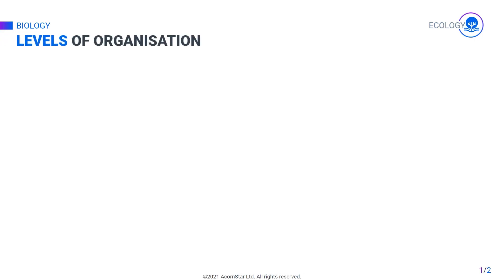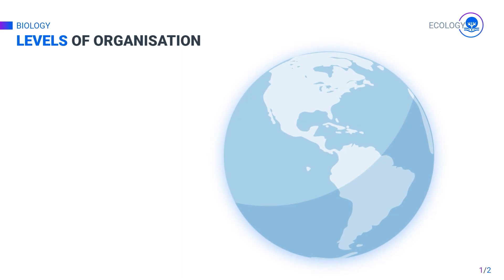Levels of organization. An ecosystem consists of four levels of organization.